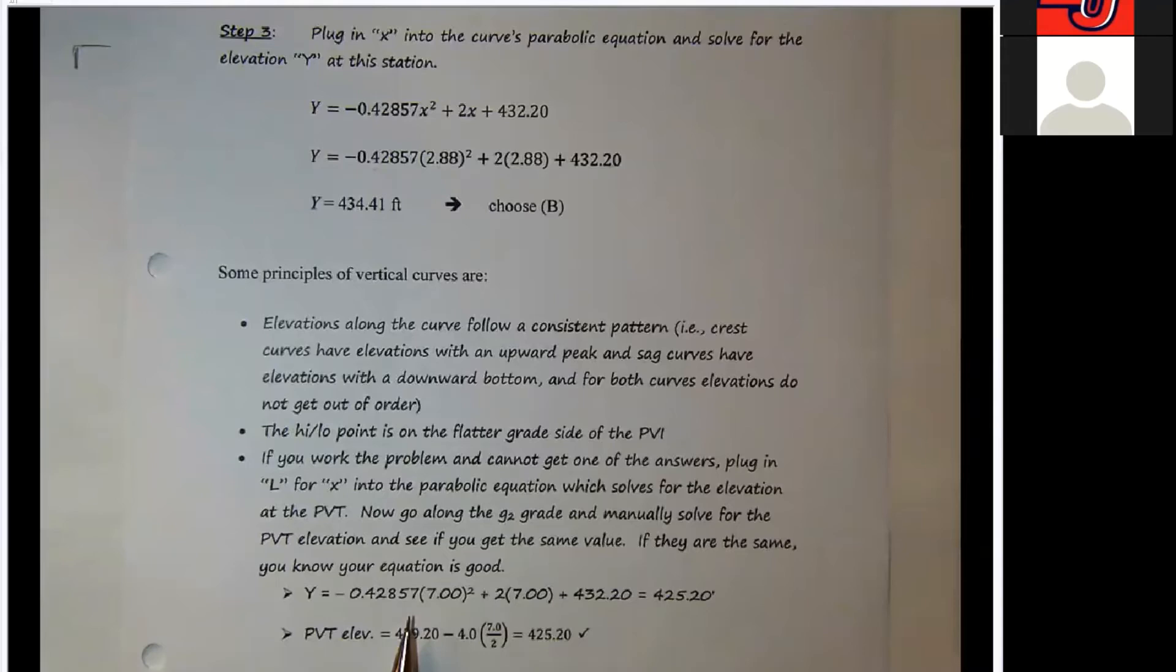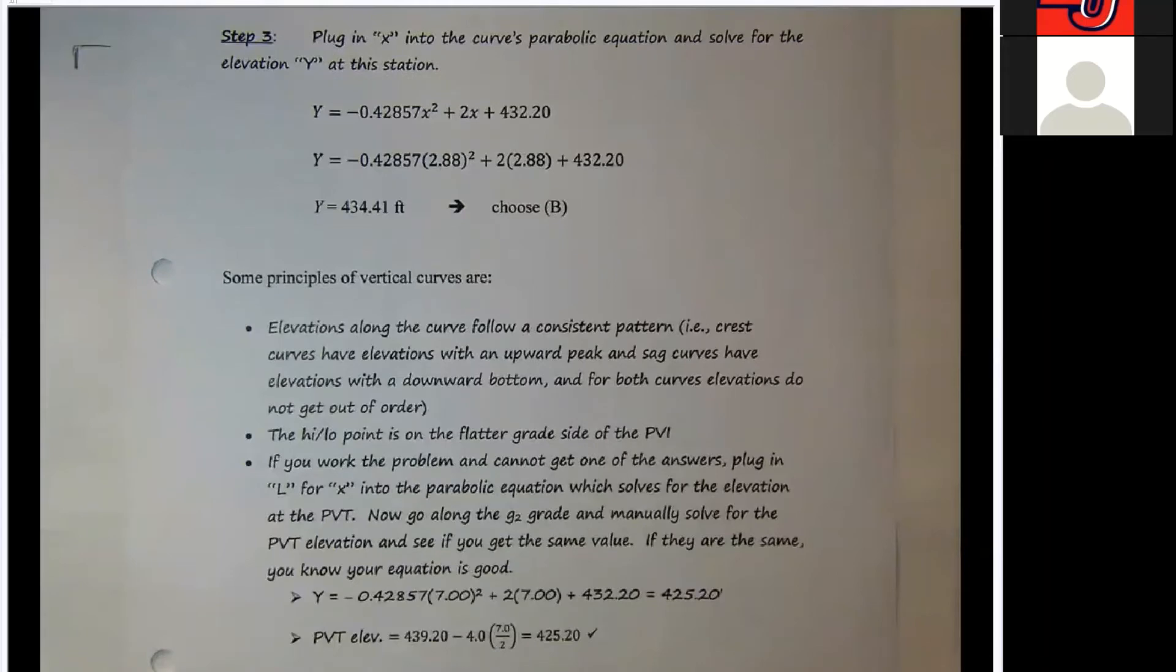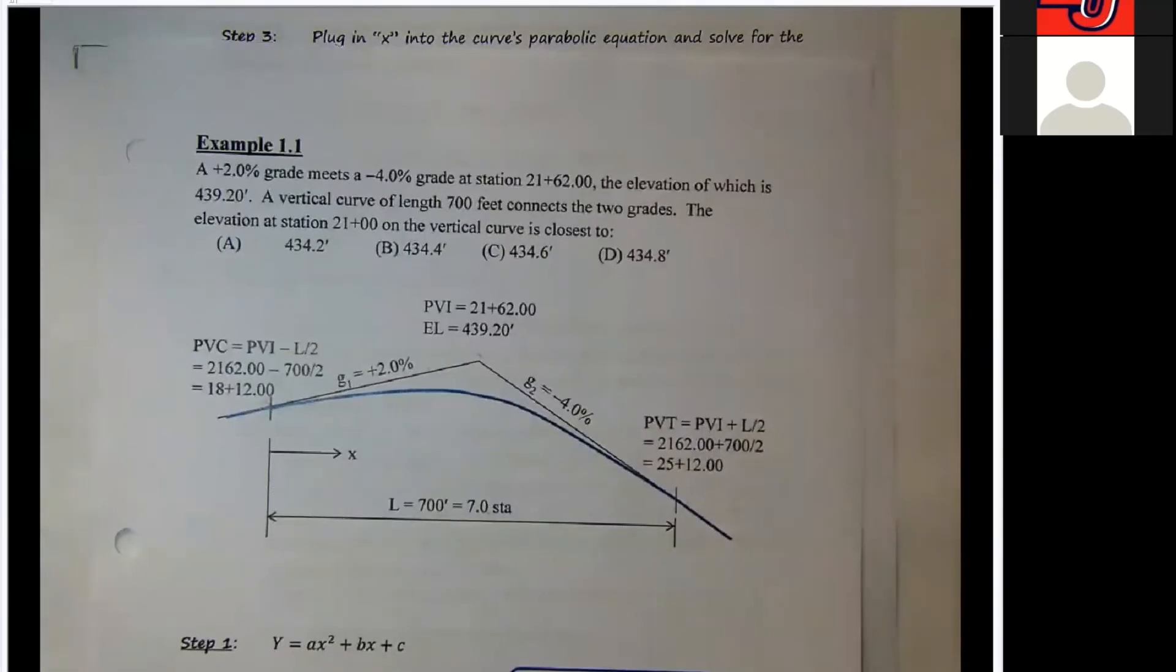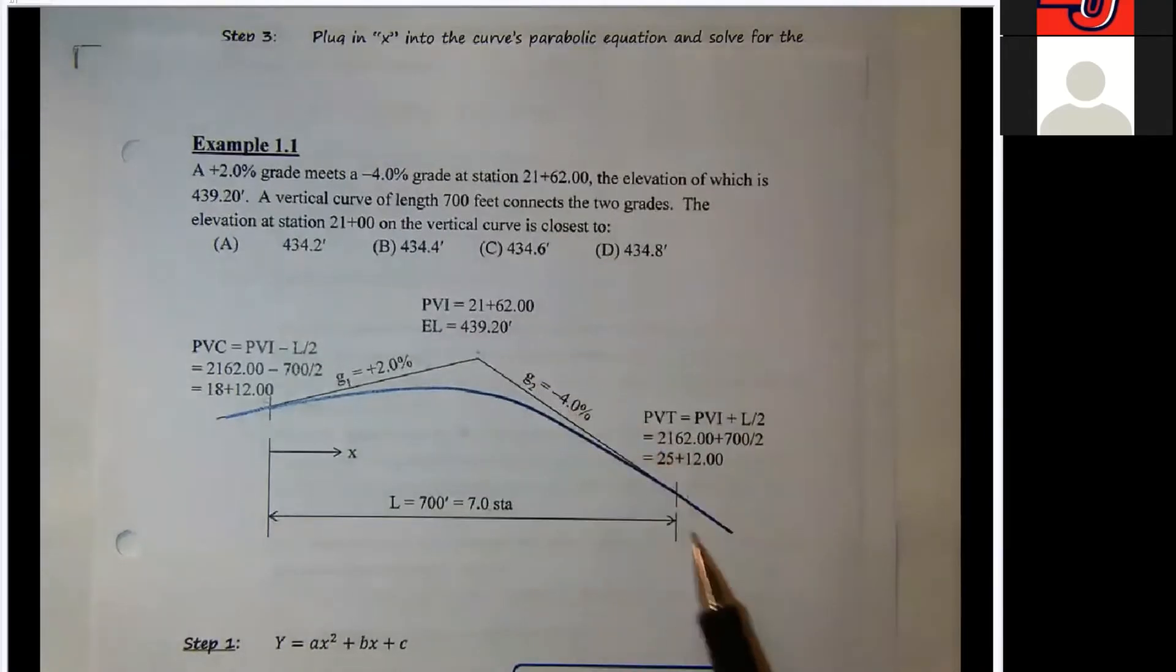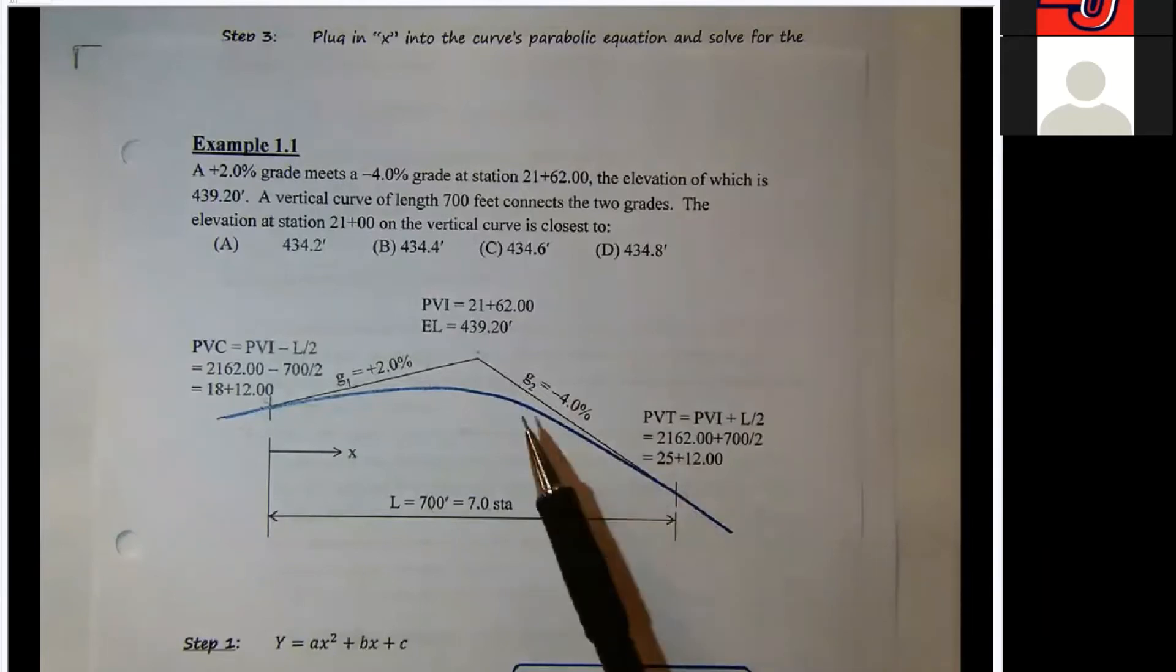In checking your equation, this is the way to do it. You can go back to your drawing right here, and sort of plug in the entire length of L into your parabolic equation, and you will calculate the elevation of the PVT based on the equation. Then manually, go up here to the PVI, and go down 4% for half your length, 350 feet.